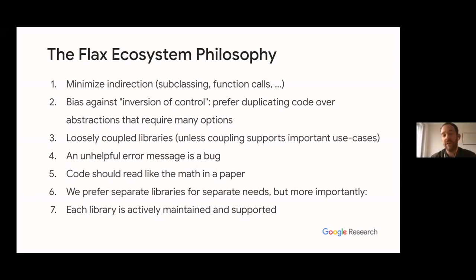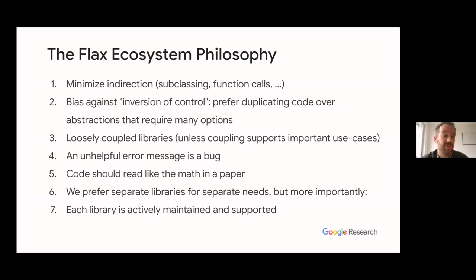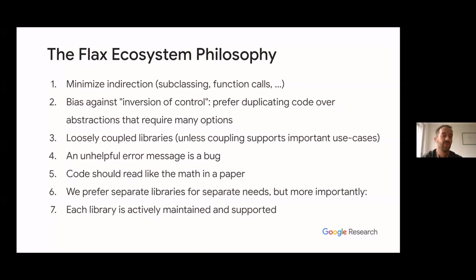What we envision for the JAX ecosystem is a set of decoupled libraries that are each individually well maintained. The first point is minimize indirection — make it easy for users to navigate to the low-level operations in their ML code, keeping control flow relatively simple, avoiding deep function chains or deep subclassing. The second is a bias against inversion of control — we prefer duplicating code over abstractions that require many options, avoiding trainer-style abstractions that capture common use cases in construction arguments.